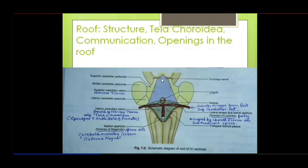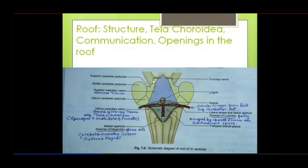You may have heard of the superior medullary velum while studying the trochlear nerve. Just below the inferior colliculus of the midbrain, dorsally, the trochlear nerve emerges. The nerve decussates within the substance of the superior medullary velum and then emerges on the opposite side. The middle portion between the two sides is called the frenulum velum.